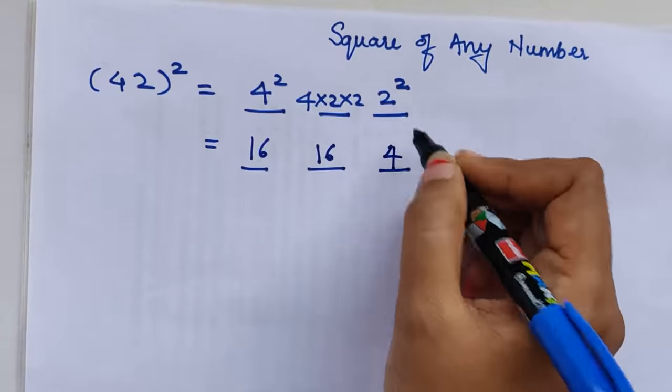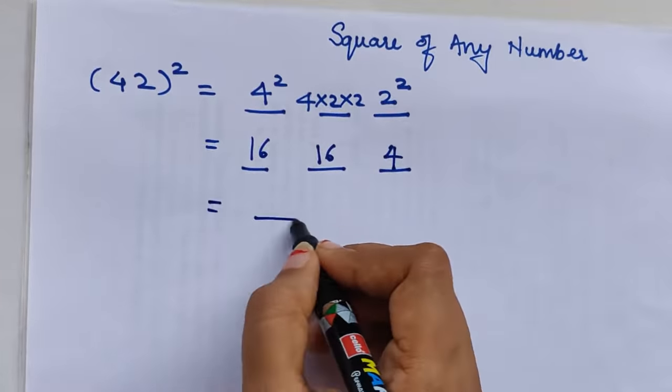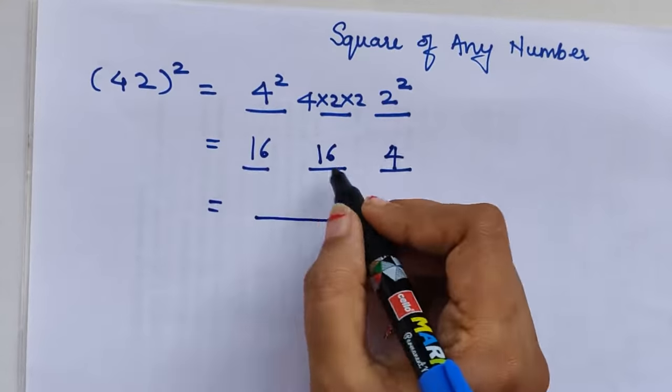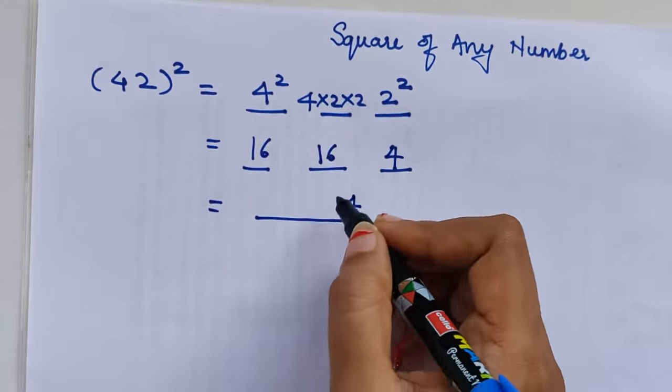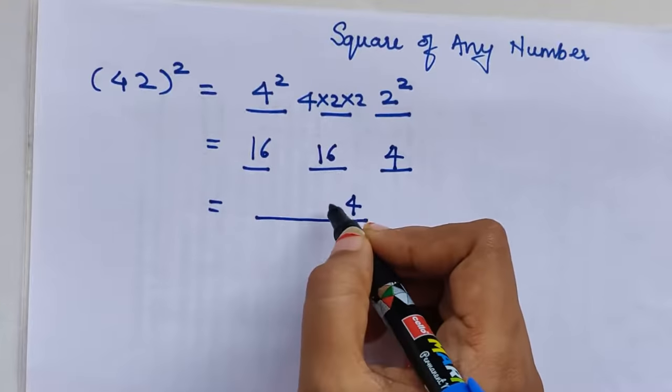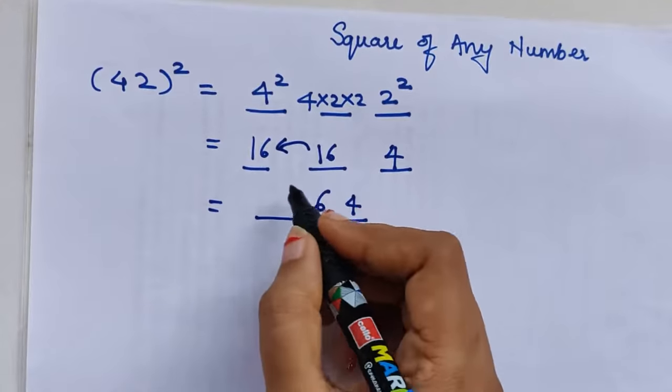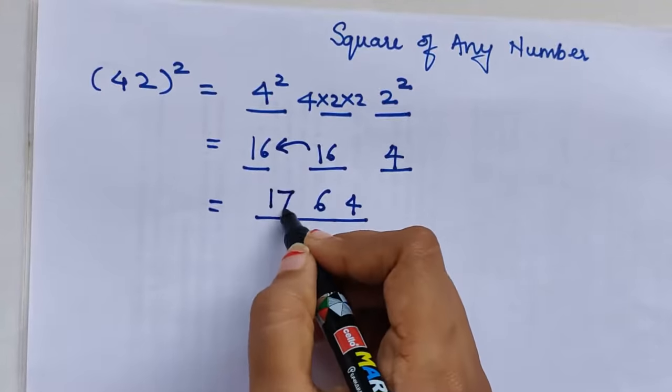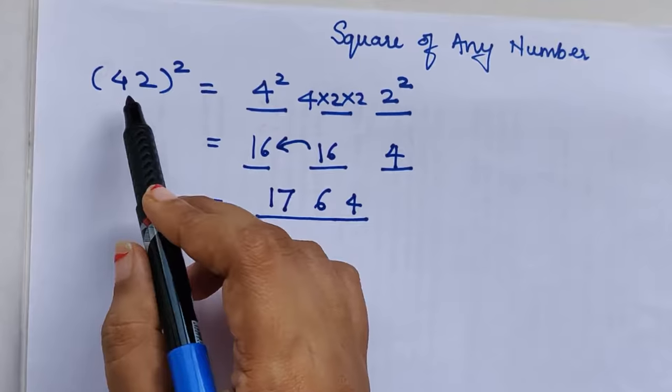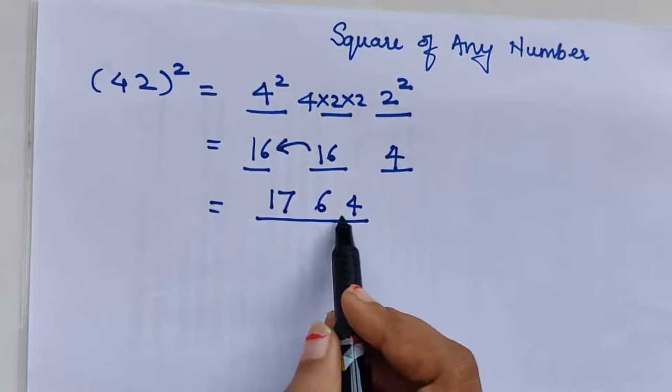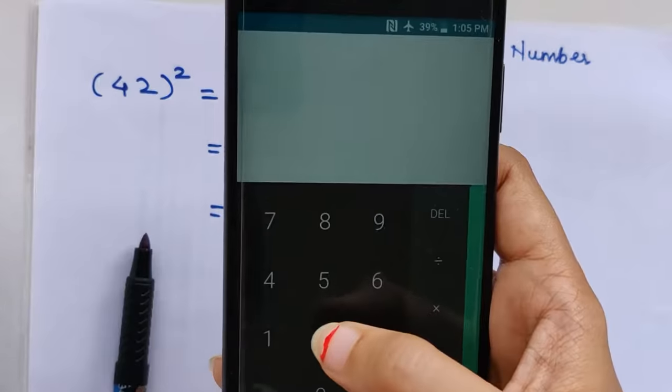To get the final answer, we'll always consider the units place. So 4 is written as it is. Since we have two digits, we'll write only 6, and 1 which is left over gets added to the next number. So 1+16 gets us 17. In this way you found the square of 42, which is 1764. You can verify this using a calculator: 42×42 gets us 1764.